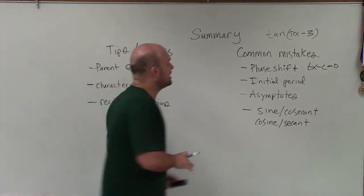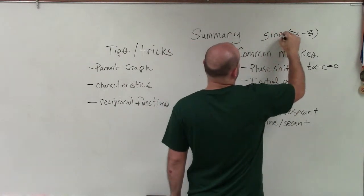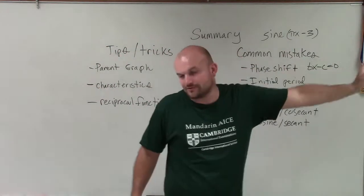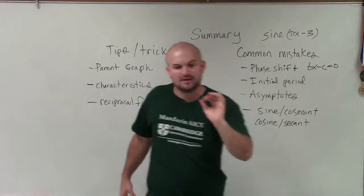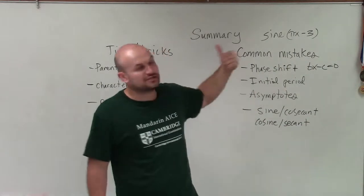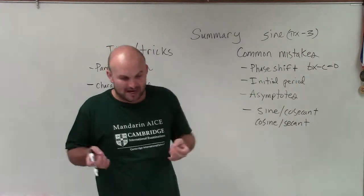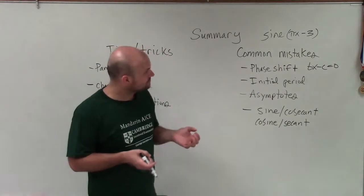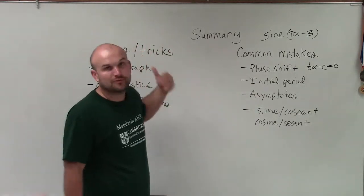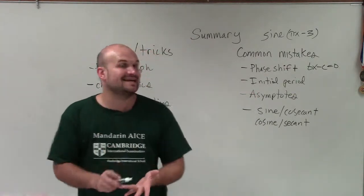Let's go into some tips and tricks. A lot of students still make the mistake of looking at their phase shift and saying this is a shift right 3. Remember, since we have a B value, to determine the phase shift we take Bx minus C. What you would notice is this is actually a phase shift of 3 divided by pi over B to the right — the period is actually being affected, so the shift is not simply 3 units to the right. This is true for sine, cosine, cosecant, and secant.